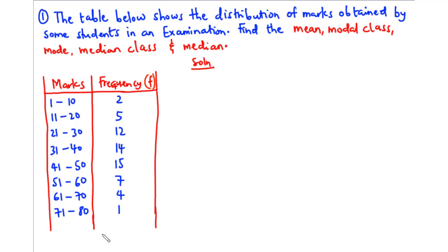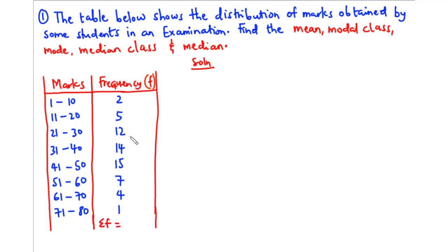First of all, let's find the sum of f. To find the sum of frequency, we need to add up all the frequency values. So we have 2 plus 5, that is 7. 7 plus 12 is 19.